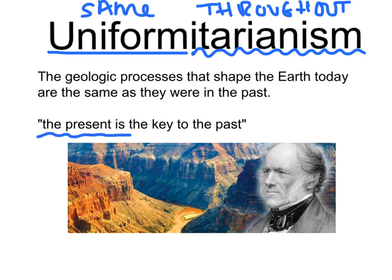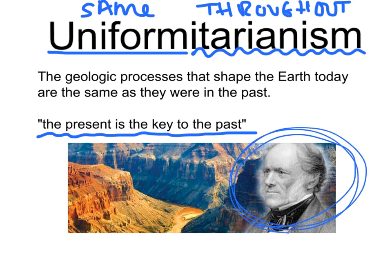This is an important statement: the present is the key to the past. You look at processes happening right now on Earth, and those same processes have been going on for a really long time. Uniformitarianism means geologic processes that shape the Earth today are the same as they were in the past. The guy credited with this idea is Dr. James Hutton, considered the founder of modern geology. Geology wasn't really a science until Dr. Hutton came along. We've got the Grand Canyon here as an example of uniformitarianism.